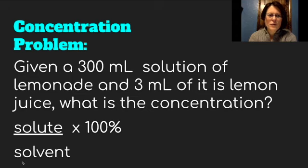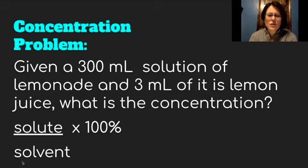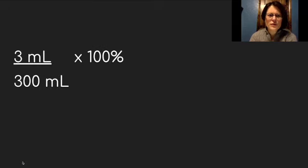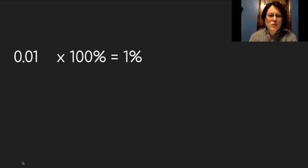An example problem: given a 300 milliliter solution of lemonade and 3 milliliters of it is lemon juice, what is the concentration? Write out this whole problem because it is similar to what you'll see on your test. We write down the equation: solute over solvent times 100%. The solute is the smaller number — 3 milliliters — and the solvent is the whole, 300 milliliters. So we have 3 mL over 300 mL times 100%, which gives us 0.01 times 100, which is 1%.